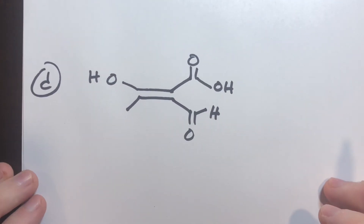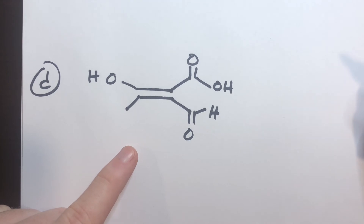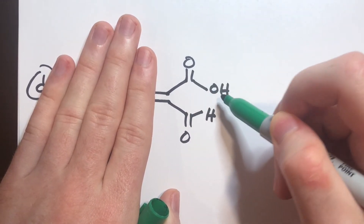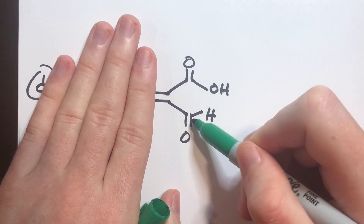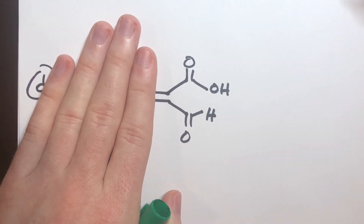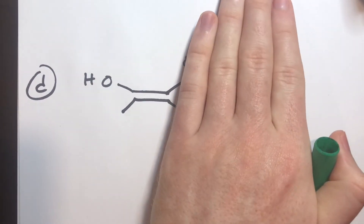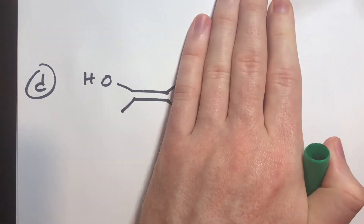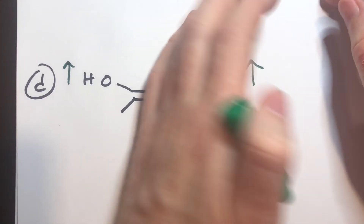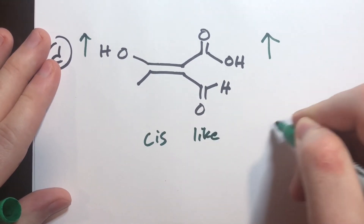One more example: we have another alkene and again we can't use cis or trans because none of the substituents are the same. Looking at the right side, we have a carboxylic acid group — a carbon bound twice to oxygen and once to another oxygen — versus a carbon in a double bond with a hydrogen. By Cahn-Ingold-Prelog rules, the carboxylic acid group is the highest priority and is oriented up relative to the double bond. On the other side, we have a carbon bound to an oxygen, which has higher priority due to its higher atomic number, also oriented up. Both highest priorities point the same direction — cis-like — so this is the Z geometric isomer.